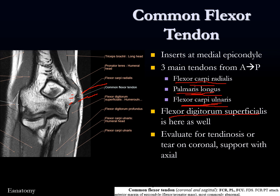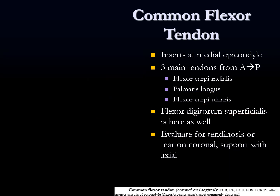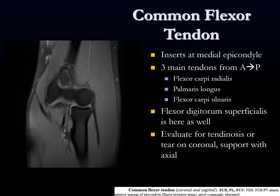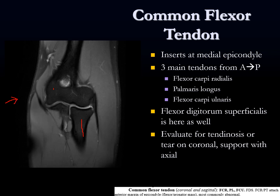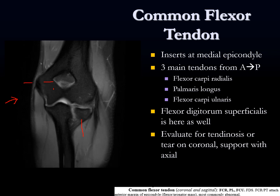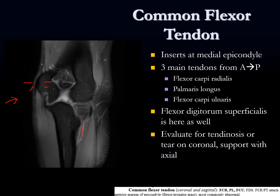Almost all the time you're going to say common flexor tendon origin tendinosis or common flexor tendon origin partial tear, without trying to separate out the individual tendon parts. The axial is the other sequence that can help support your findings — if you think there's an abnormality on the coronal, correlate with the axial. On our scrollable images we're looking for the common flexor tendon on the fluid-sensitive coronal. Here's a nice normal dark attachment at the common flexor tendon origin with no concern for partial tear or tendinosis.